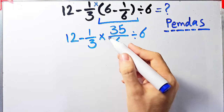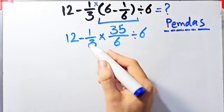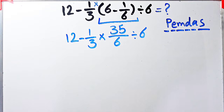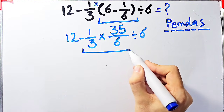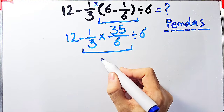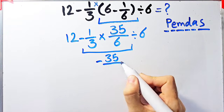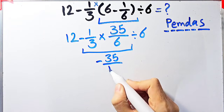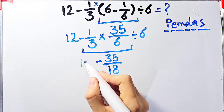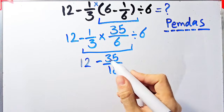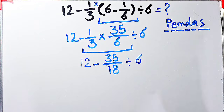Now the question is: 12 minus 1/3, then times 35/6, divided by 6. We have subtraction, multiplication, and division. We do the multiplication first: negative 1/3 times 35/6 equals negative 35/18.